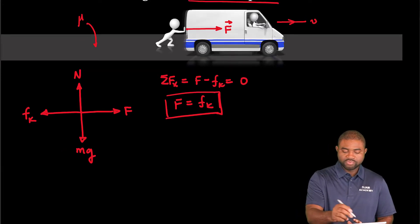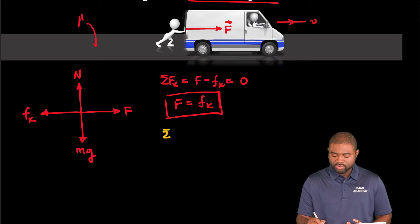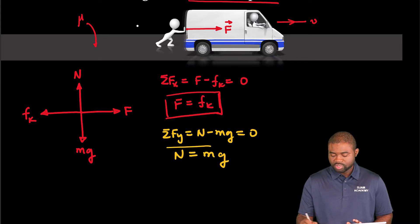Now the sum of forces in the y direction is equal to N minus mg. All of this will be equal to zero. This means that N is equal to mg. This defines the normal force acting on the car.